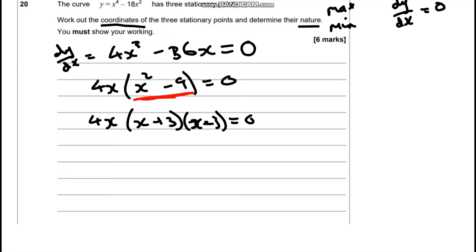So we've got our values of x being x equals 0 or x equals negative 3 or x equals positive 3. Now they specifically ask for the coordinates, so we're going to have to substitute these values in. So we're going to get y equals 0 to the power of 4 take away 18 lots of 0 squared, which is 0.